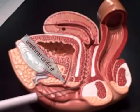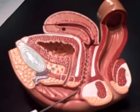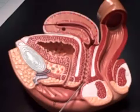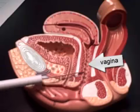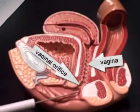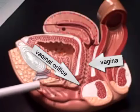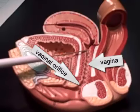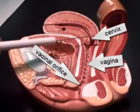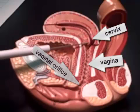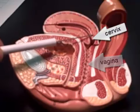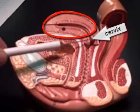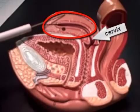To the posterior part of the vestibule we have the vagina — this muscular tube — and the vaginal orifice. The vagina goes up towards the cervix, which is the entrance area to the uterus.